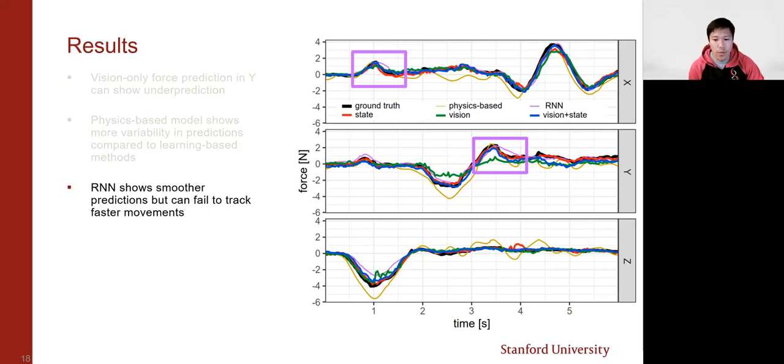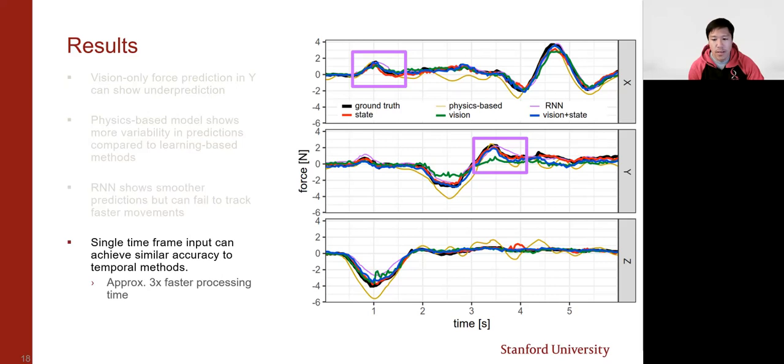However, compared to the RNN, the vision and state plus state networks showed approximately 3x faster inference speed and similar accuracy, and we think that this makes it a better candidate for use in real-time applications.